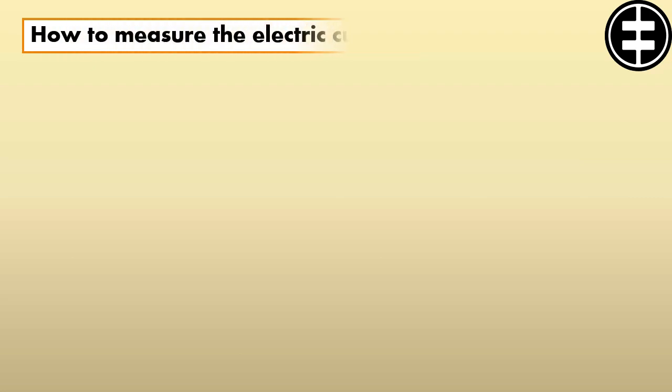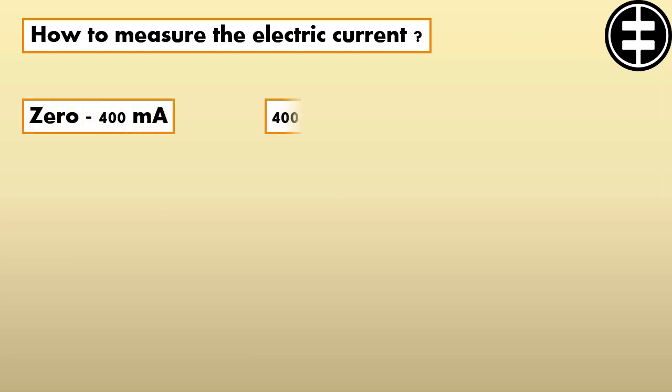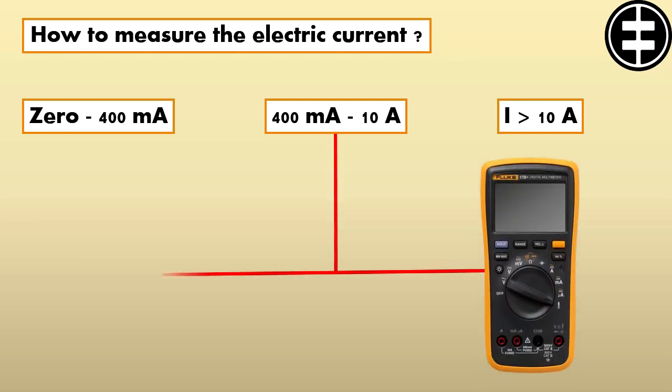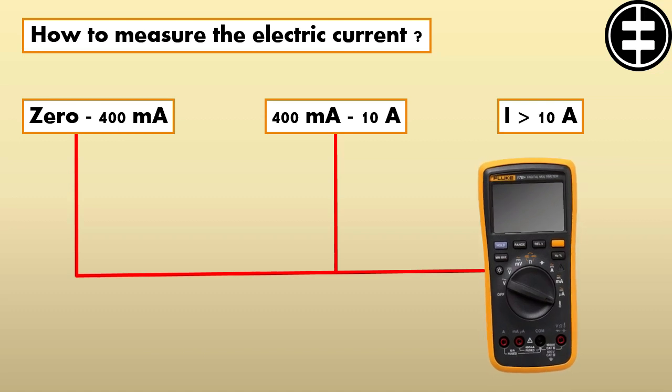Now how to measure the electric current? We need to divide the current into three main values: from 0 to 400 milliampere, from 400 milliampere to 10 ampere, and any current higher than 10 ampere. In the first two values we will use a multimeter. Note that these values can be changed according to your multimeter type.